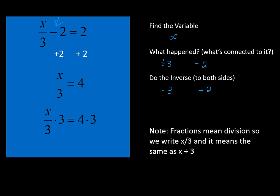Notice we're multiplying times 3 on both sides of the equation. x divided by 3 times 3 cancels out to leave us x on the left side, and 4 times 3 is 12. That'll be our final answer. x is equal to 12.